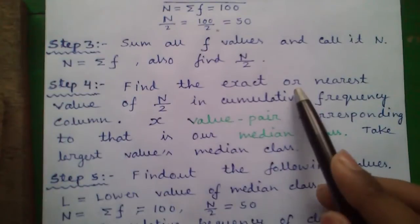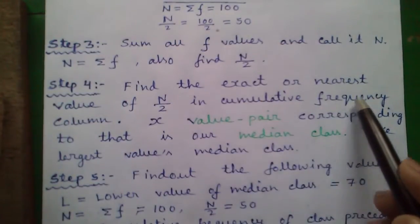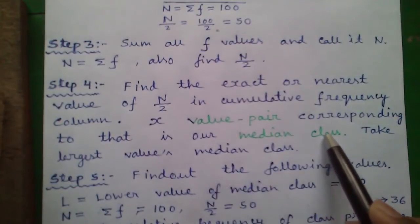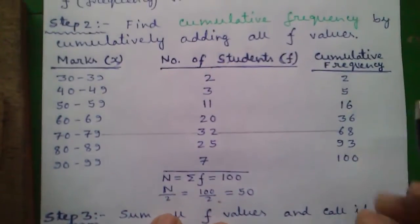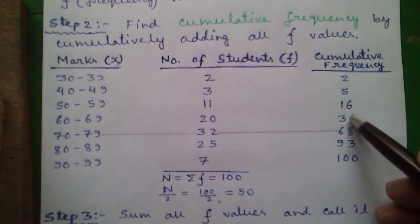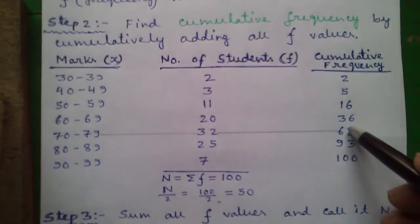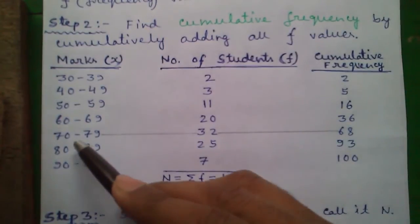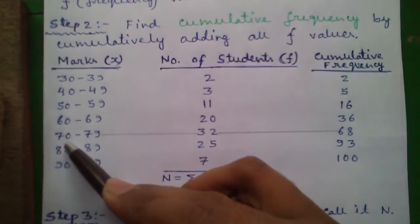Step 4: Find the exact or nearest value of n by 2 in cumulative frequency column. The x value pair corresponding to that is our median class. Take the largest values median class. That means our n by 2 is 50 and 50 lies between 36 and 68 in cumulative frequency column. So largest value is 68 and 68's corresponding x value pair is 70 to 79, so this is our median class.